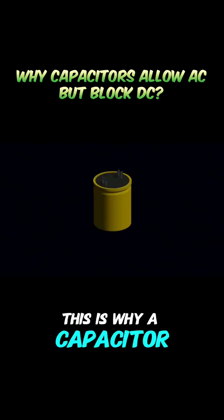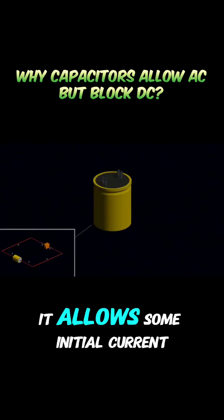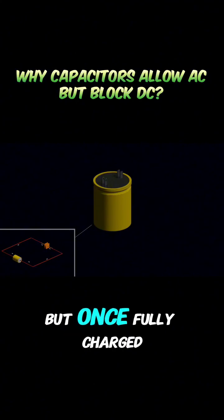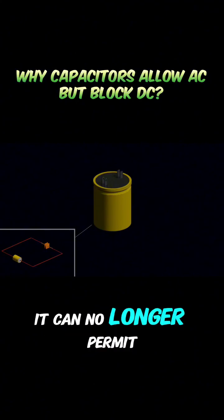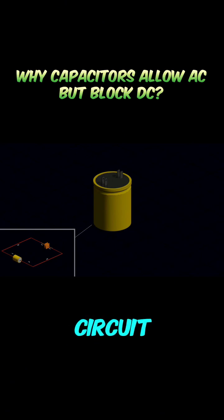This is why a capacitor blocks DC. It allows some initial current flow, but once fully charged, it can no longer permit any current flow in the circuit.